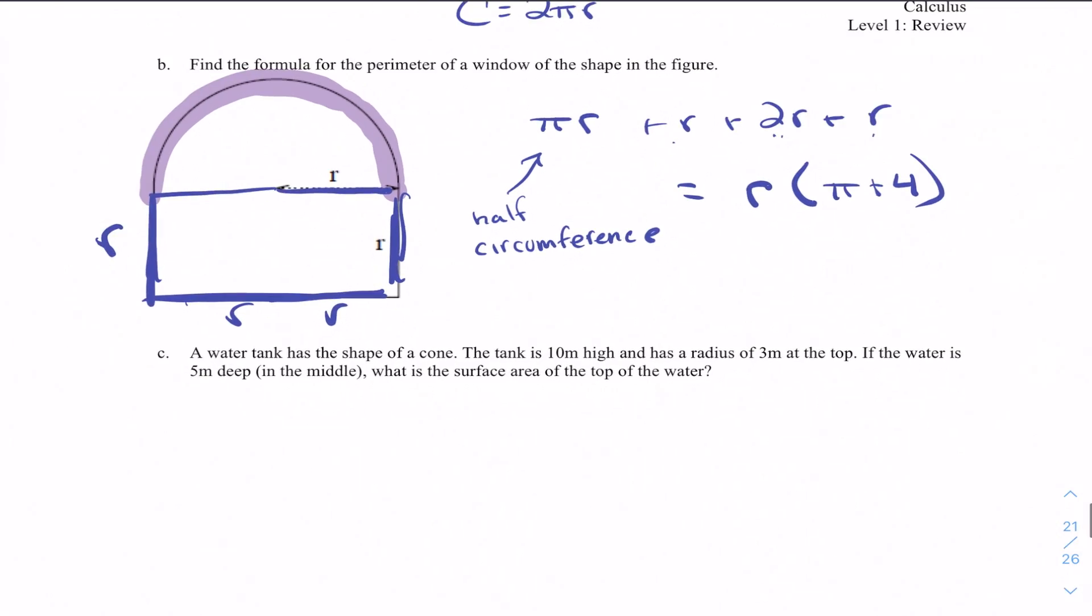So that's not that bad. But once we start putting these problems into context, now we have to do a little bit more work. So a water tank is a shape of a cone. So here's a cone, kind of like what you would get at a dentist's office if you're getting water. The tank is 10 meters high, so from top to bottom, that's 10 meters, and has a radius of 3 meters at the top.